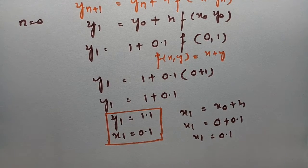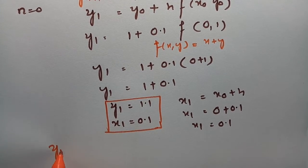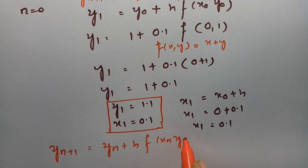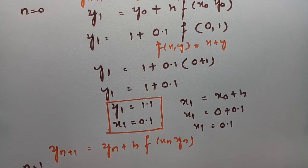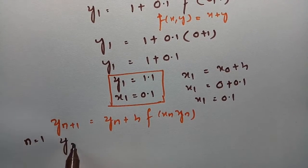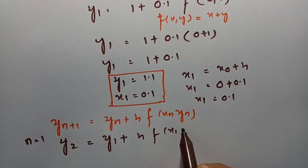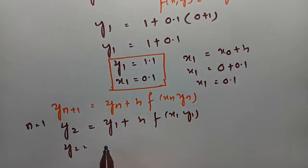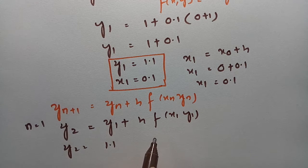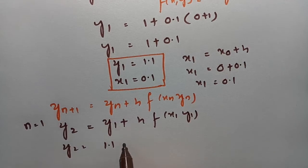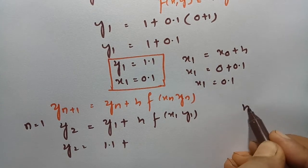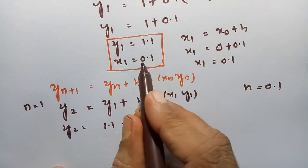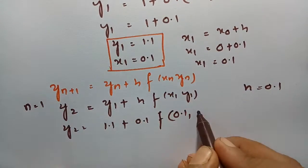After getting these two values, again according to Euler's method, y(n+1) = y_n + h · f(x_n, y_n). Now keeping n = 1: y_2 = y_1 + h · f(x_1, y_1). y_1 = 1.1, h = 0.1, x_1 = 0.1, y_1 = 1.1.